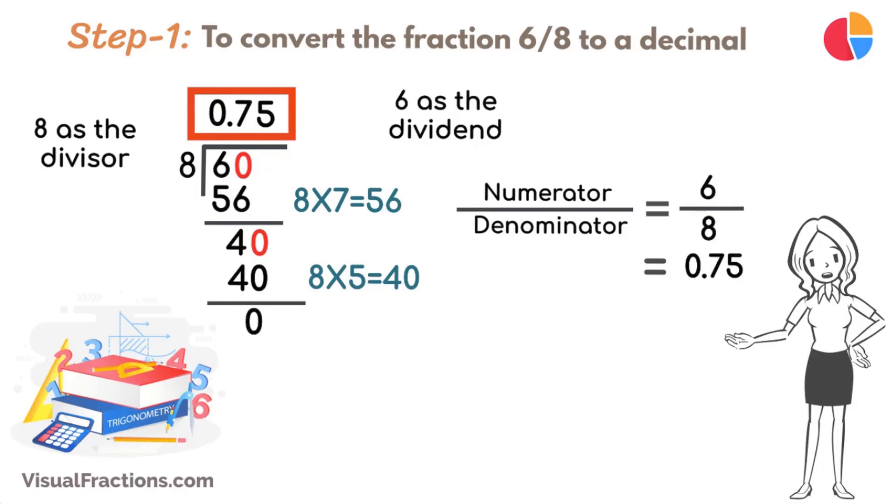Now, to convert 0.75 to a percent, we simply multiply it by 100, resulting in 75%.